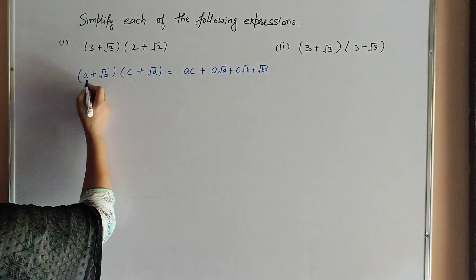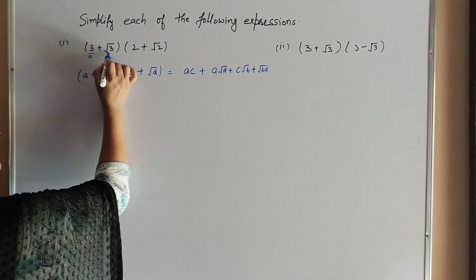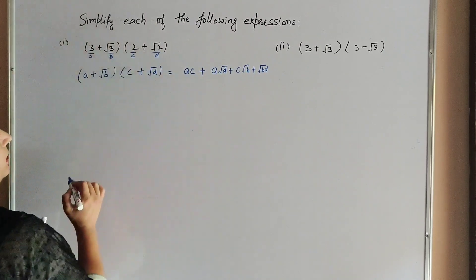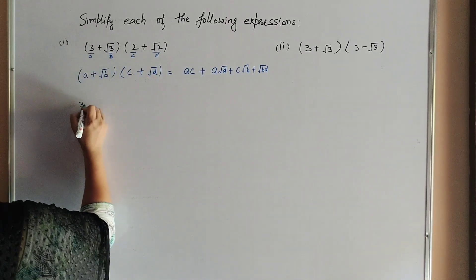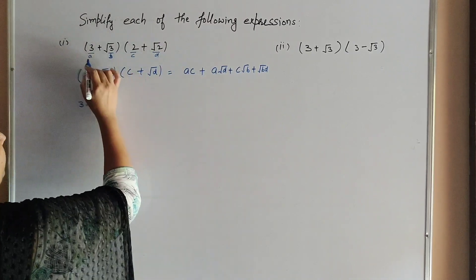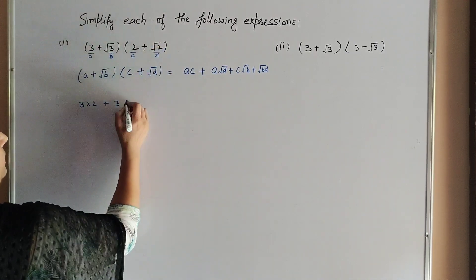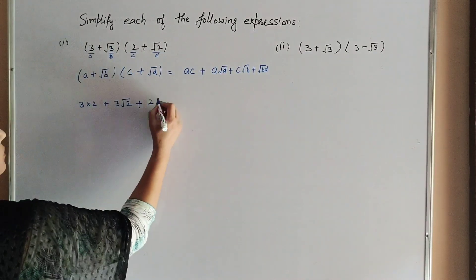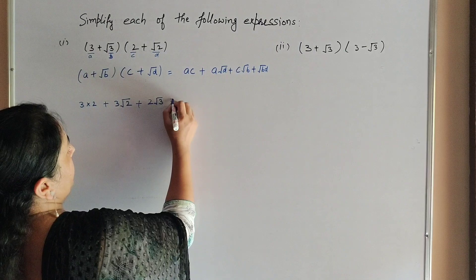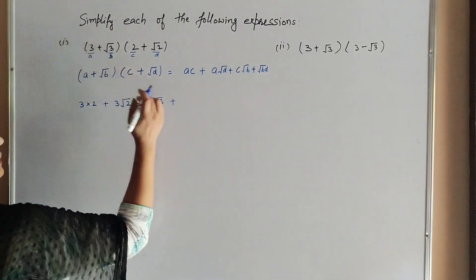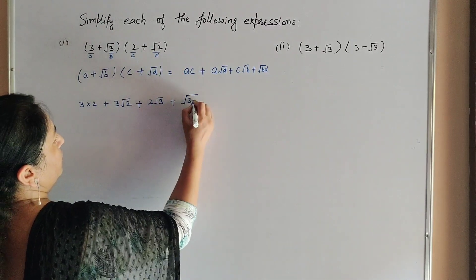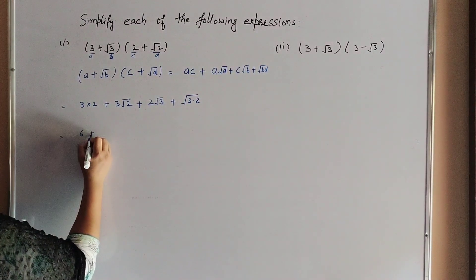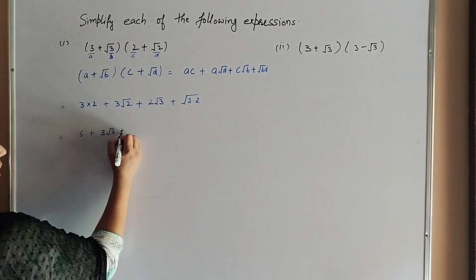Here a = 3, b = 3, c = 2, and d = 2. Applying the identity: ac = 3×2 = 6, plus a√d = 3√2, plus c√b = 2√3, plus √b × √d = √3 × √2 = √6. So the answer is 6 + 3√2 + 2√3 + √6.